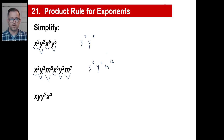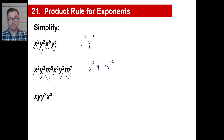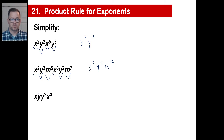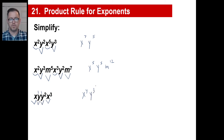Here's another one — pause and copy. Now, this is slightly strange: what's missing? There's no exponent shown here, so we assume it is the number 1. So there's an x to the 1st and a y to the 1st. Then x to the 1st times x to the 3rd is x to the 4th, and y to the 1st times y to the 2nd is y to the 3rd.